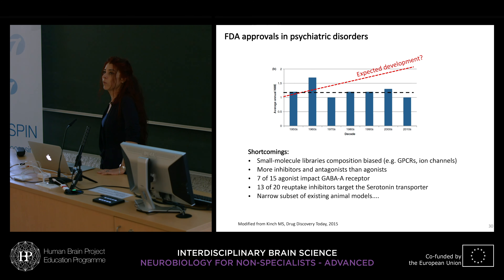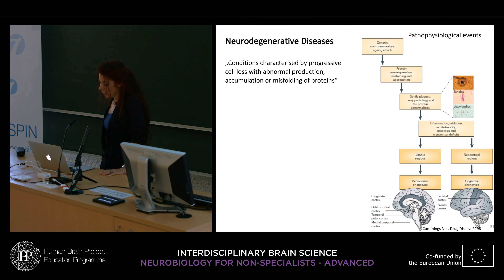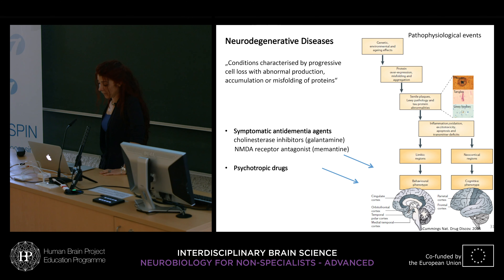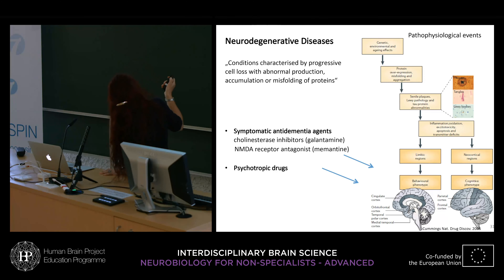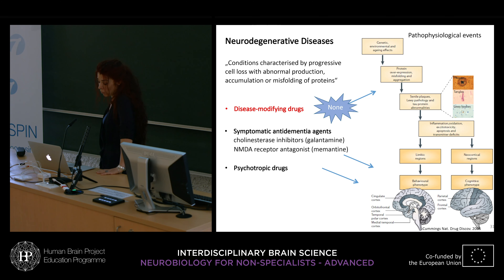In the case of neurodegenerative diseases, these conditions are characterized by progressive cell loss and accumulation of misfolded proteins. The pathophysiological events begin a long time before the behavioral or cognitive phenotype is clinically recognized. Currently available medications are symptomatic anti-dementia agents and psychotropic drugs affecting very downstream steps — but we are missing disease-modifying agents for the earlier stages. At the moment there is still no drug active for those upstream processes.